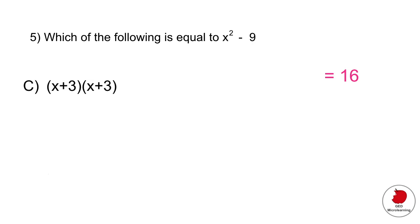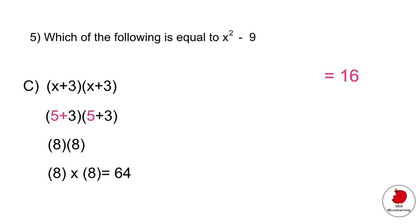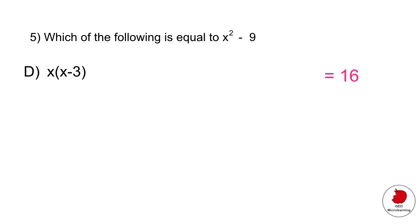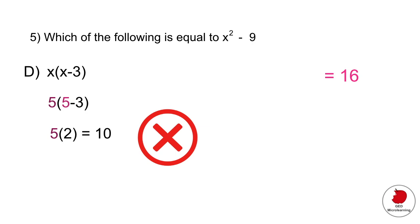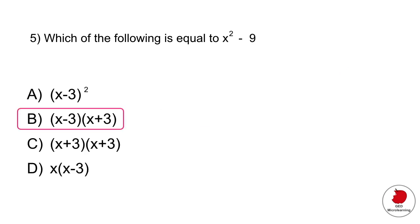Let's verify the remaining options. Plugging in x equals 5: 5 plus 3 times 5 plus 3 equals 8 times 8 equals 64 — incorrect. And 5 multiplied by 5 minus 3 equals 5 times 2 equals 10 — also incorrect. So the only correct option is option B, and I've shown you two ways to solve it — factoring and the plug-in method.